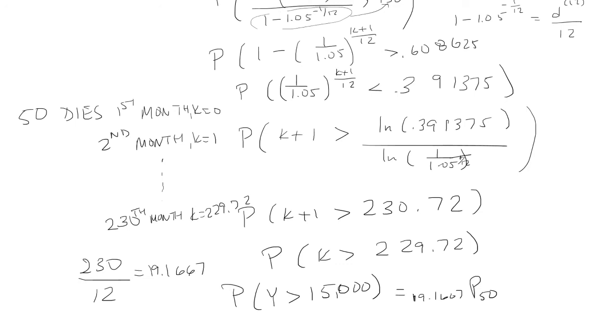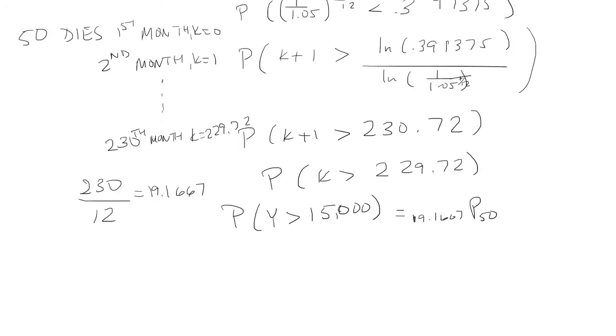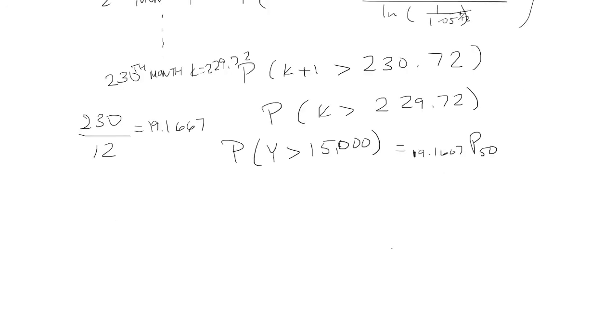Now we have to use the fact that we have UDD and we can use the standard ultimate life table. So we're going to do 1 minus 0.1667 times L69 plus 0.1667 times L of 70 all over L of 50.